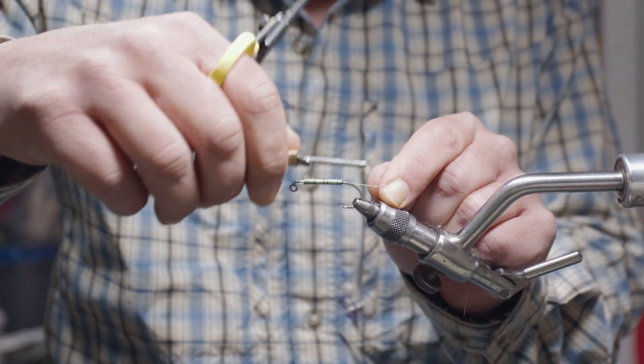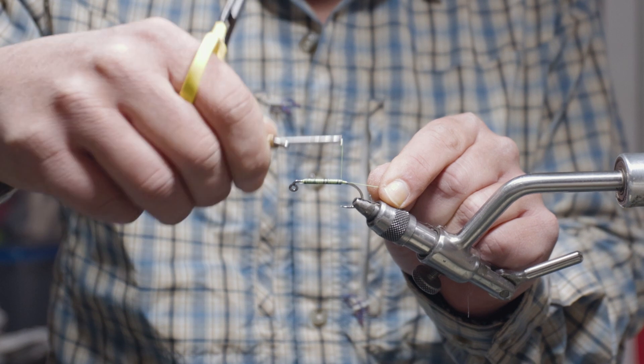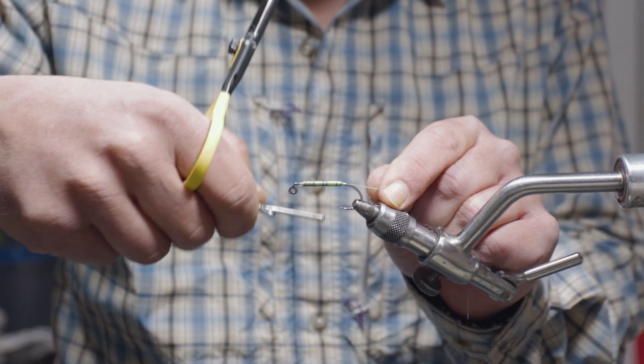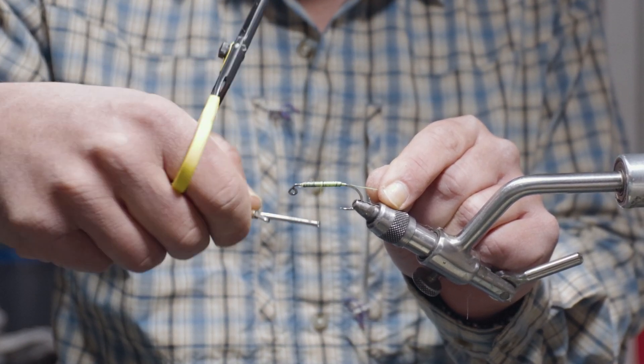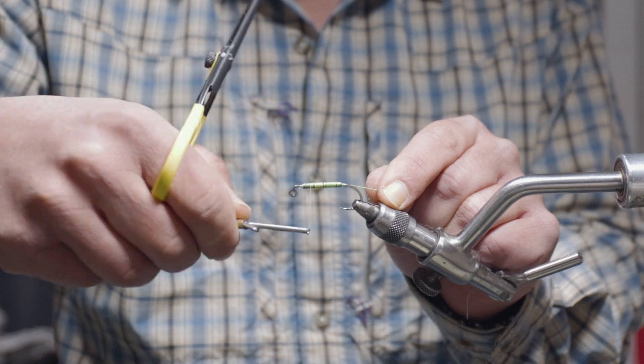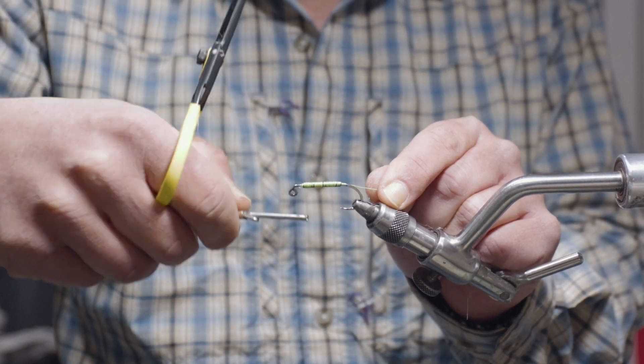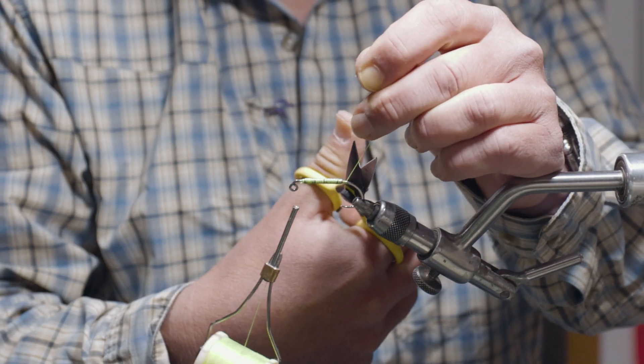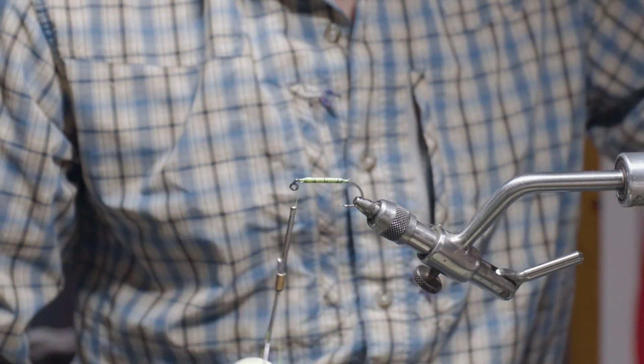That lead wire is going to make this fly heavier, which is seldom a bad thing for a permit fly. It's also going to give a nice foundation for the body itself and the lead eyes.